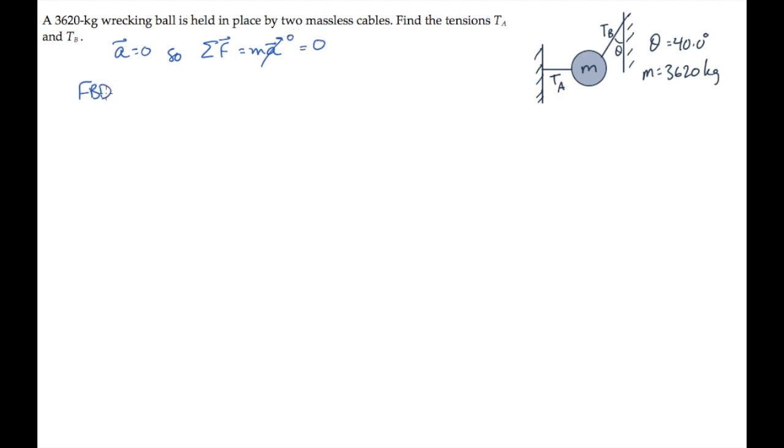Now let's draw a free body diagram of the wrecking ball with mass m. There are three forces acting on it. Its weight is directed down as always, tension a is to the left, it's horizontal, and tension b is upward and to the right with this angle theta.